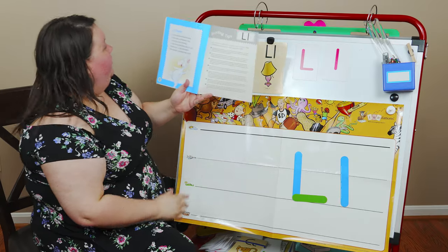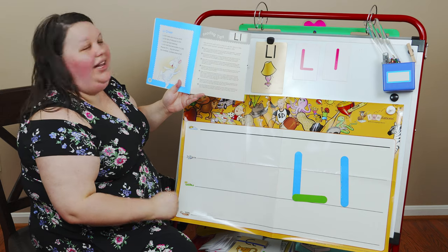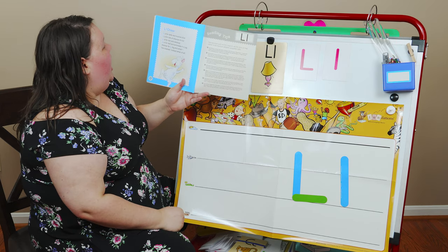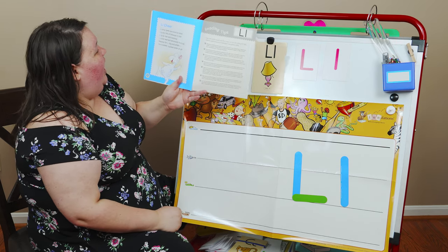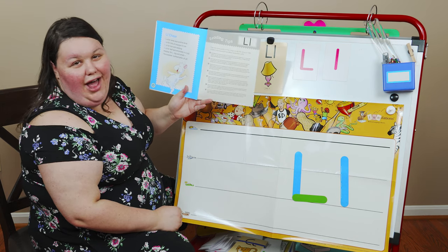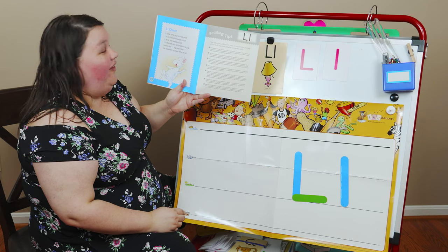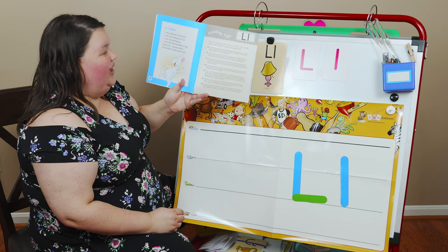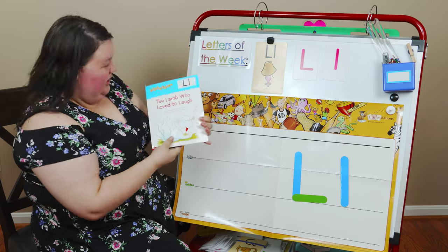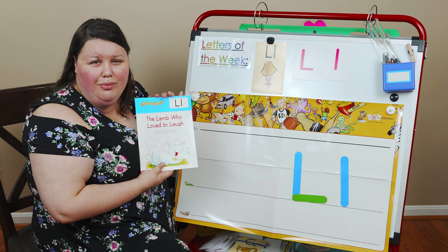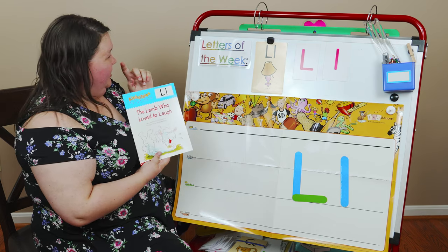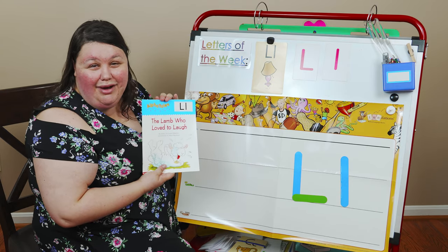Let's do our L poem. L is for lamb and licorice stick. L is for lots of lollipops to lick. L is for lion and ladybug. L is for leaf and lemonade in a jug. Hooray for L big and small — the loveliest, luckiest letter of all. Good job, my friends. We got to read our L book today. There were so many words in there that started with the L sound.